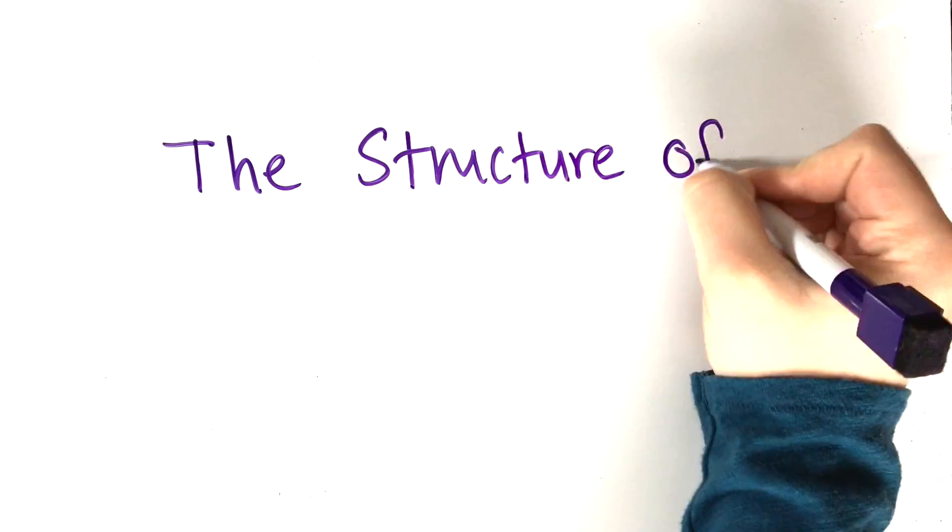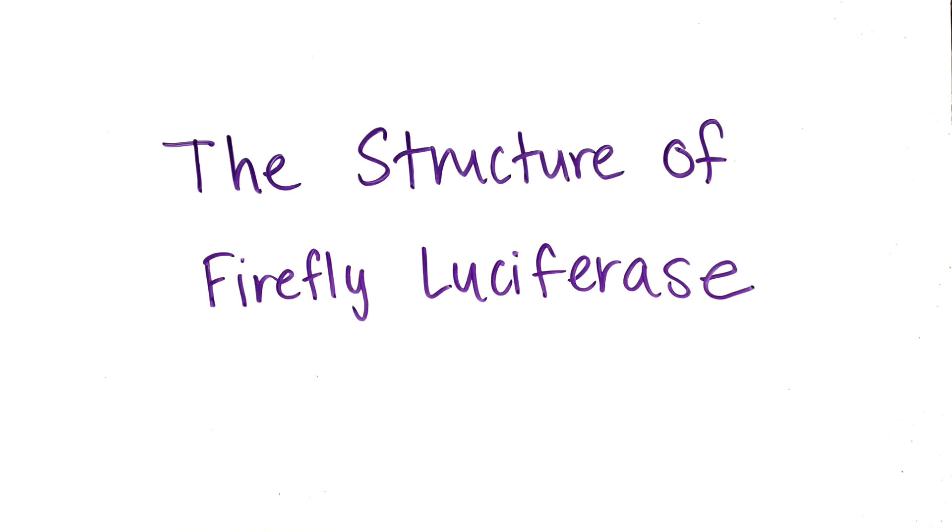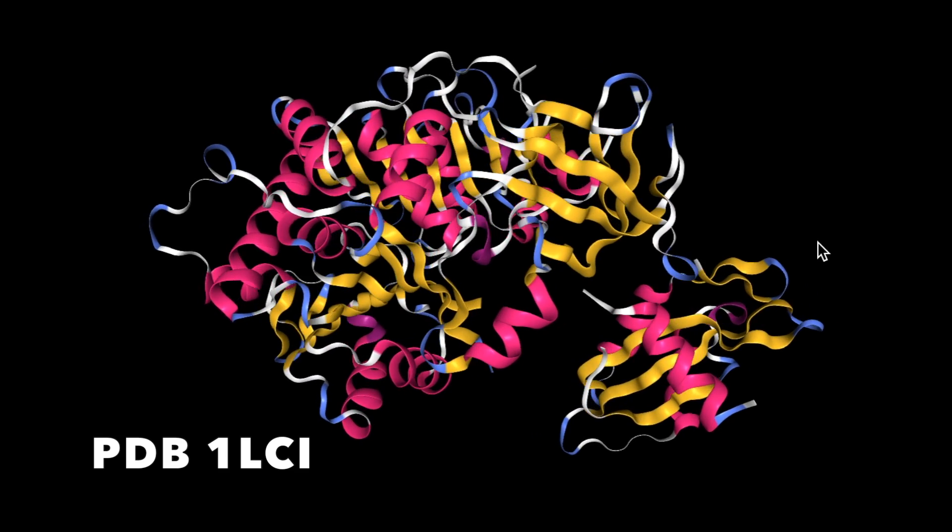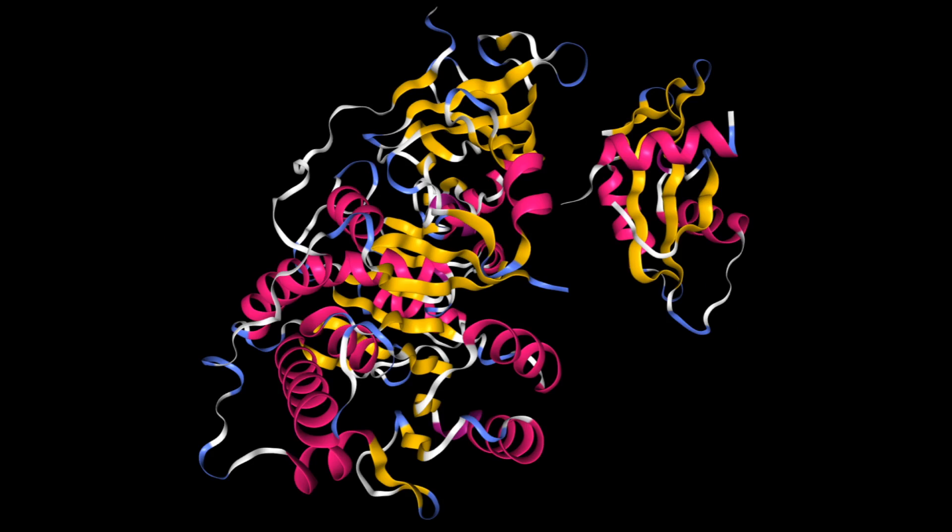Now let's take a look at the structure of firefly luciferase. This luciferase is composed of a single polypeptide chain with residues 4 through 436 making up the large N-terminal domain and residues 440 through 544 making up the smaller C-terminal domain. The N-terminal domain contains a beta barrel and a five-layered alpha-beta-alpha-beta-alpha structure. The C-terminal domain has five beta strands and three alpha helices. A disordered loop connects the two domains.